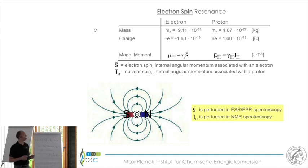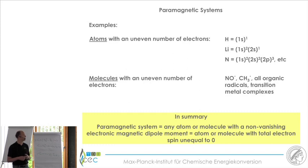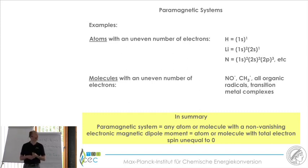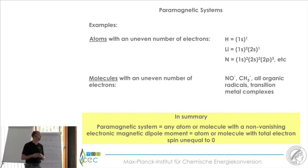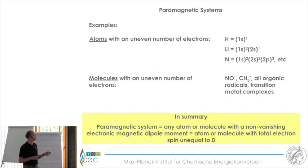Paramagnetic systems are in the first place atoms or molecules with unpaired electrons. According to the Aufbau principle, doubly occupied orbitals do not contribute to the electronic magnetism — only the unpaired electrons do. So atoms with an odd number of electrons, and likewise molecules, are paramagnetic. In general, a paramagnetic system is any atom, molecule, or entity where unpaired electrons are present and the total electron spin is non-zero.